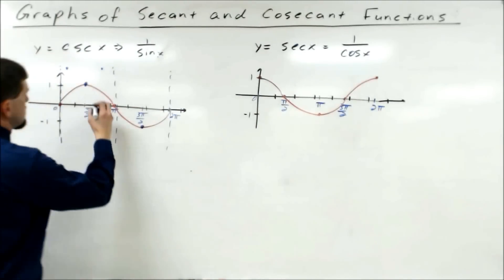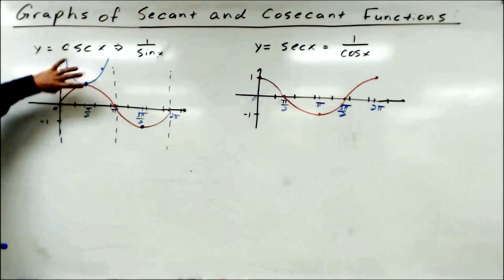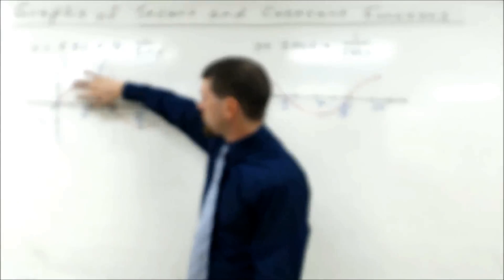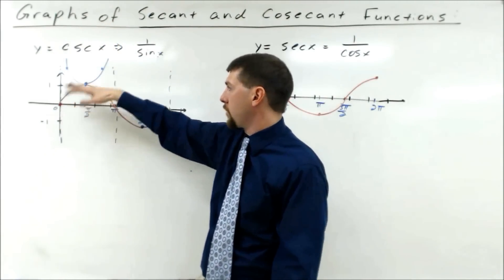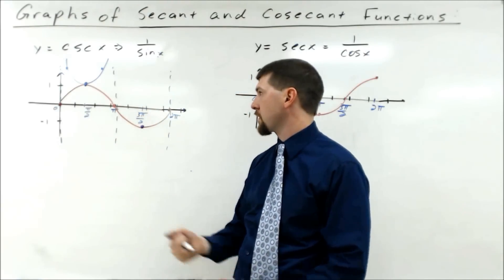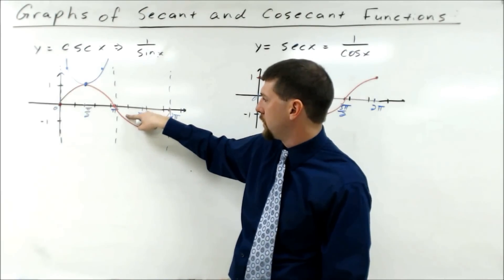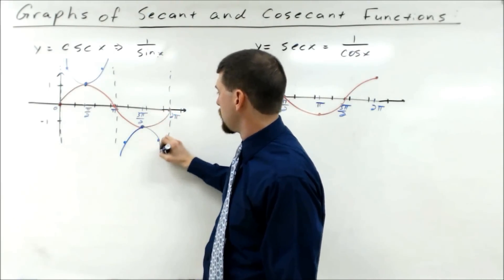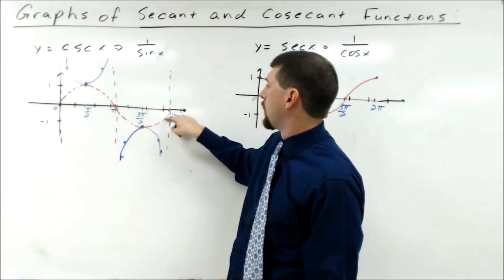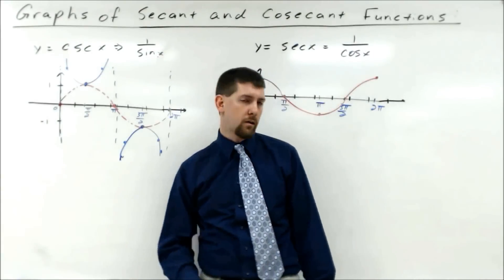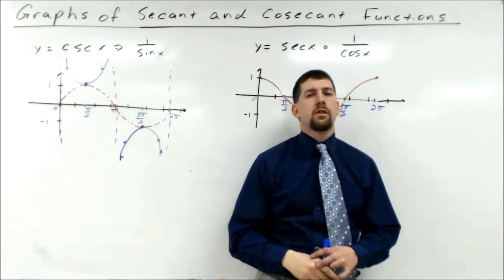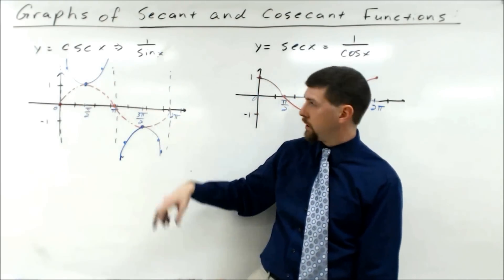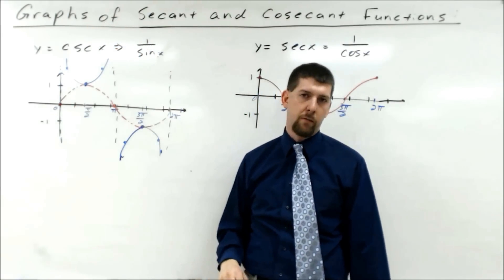What we're doing when we take the reciprocal is essentially taking the curve and flipping it away from the x-axis. This curve is being flipped away from the x-axis because we can't cross it — we have those vertical asymptotes. A value of negative one half flips down to negative two. The blue graph shown here is one cycle of the cosecant function. You go through it the same way as a sine graph, but instead of connecting the dots, we curve away from those maximum and minimum points, staying between the asymptotes.